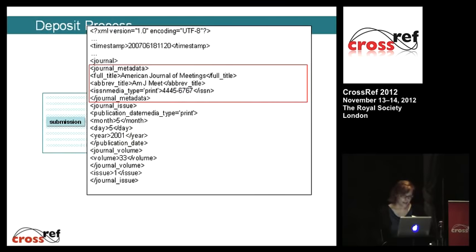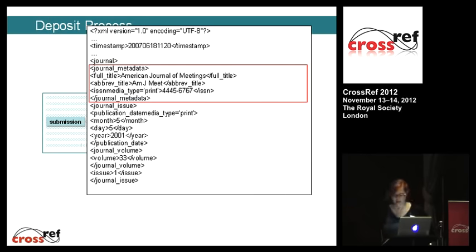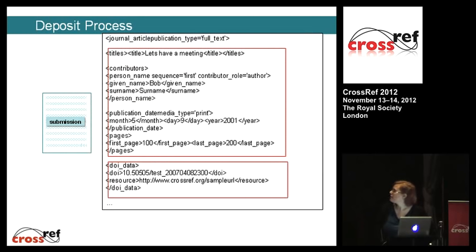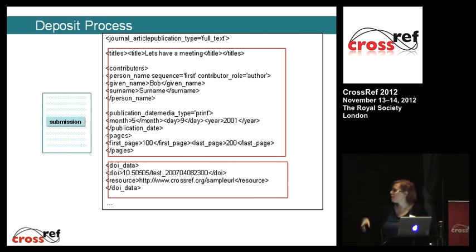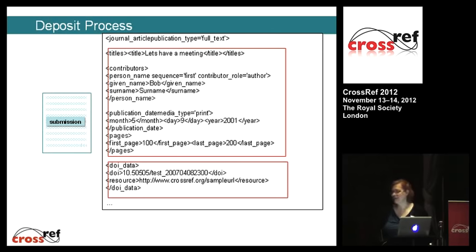When you send us a deposit — this is just a really simple journal deposit — it contains basic examples like journal title and ISSN, and also important article information like the article title and contributor names. We ask that you send in all of the authors. And of course, one of the very important pieces of metadata is the DOI and the URL.